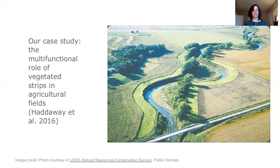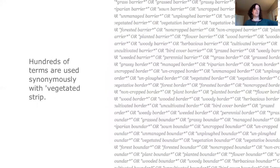Vegetated strips are intentionally installed to serve any number of roles — this could be mitigating pesticide runoff, preventing erosion, or increasing beneficial insects, just to name a few. This particular evidence and gap map aimed to map the evidence on the effect of vegetated strips in serving these multifunctional roles. In addition to standard types of analysis, these authors also did some interesting text analysis and found a truly stunning array of terminology used to describe vegetated strips.